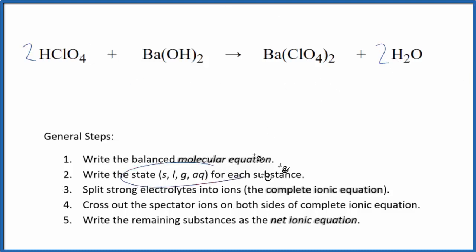Now we need to write the states for each substance. HClO4 is a strong acid. That means it's a strong electrolyte. It'll dissociate into its ions. Put aqueous after it. Barium hydroxide, strong base, put aqueous after that as well.